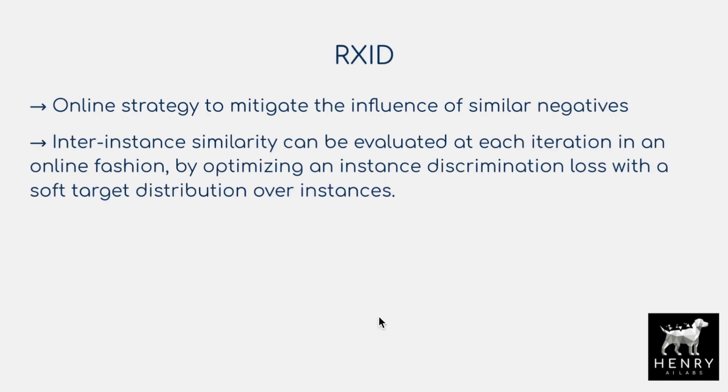The blog post also describes a strategy to mine similar negatives and positive pairs online to structure the loss without expensive offline computation. Rather than pausing training to compute all representations and do nearest-neighbor lookups, they train an instance discriminator to facilitate retrieval of nearby neighbors.